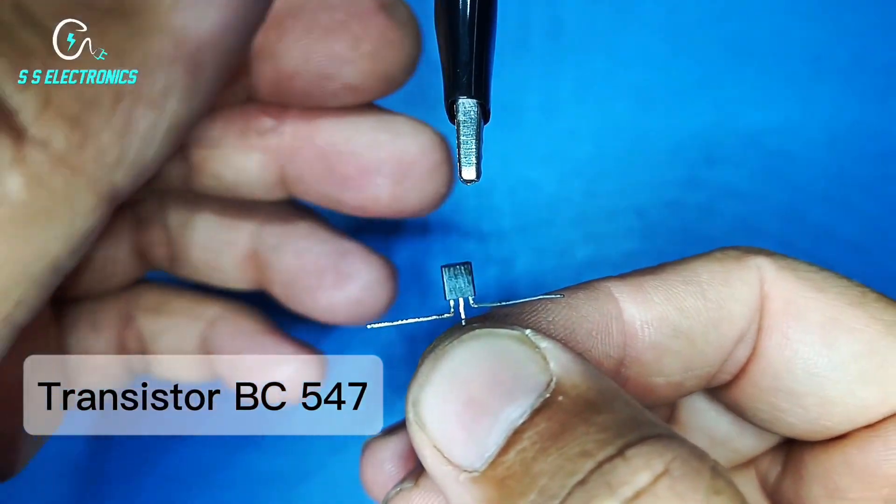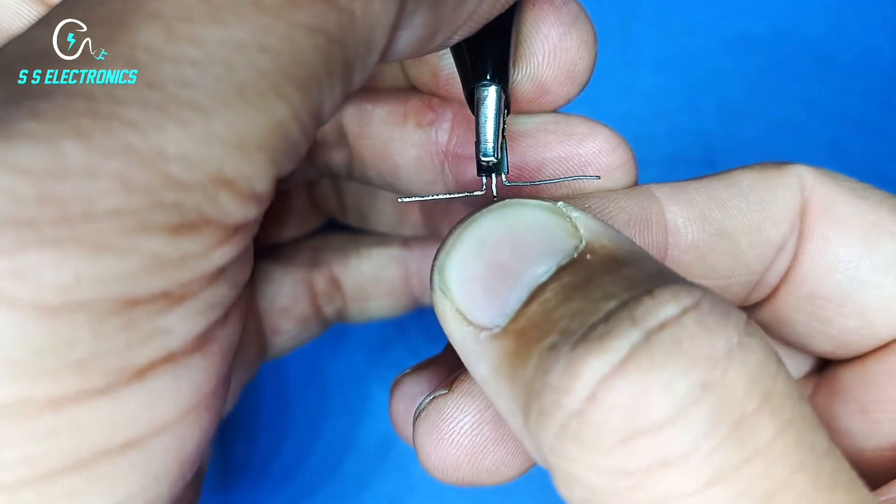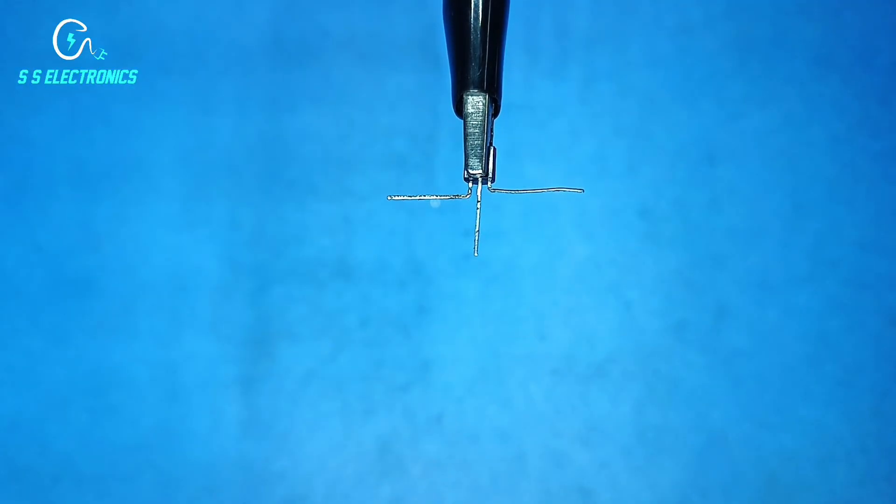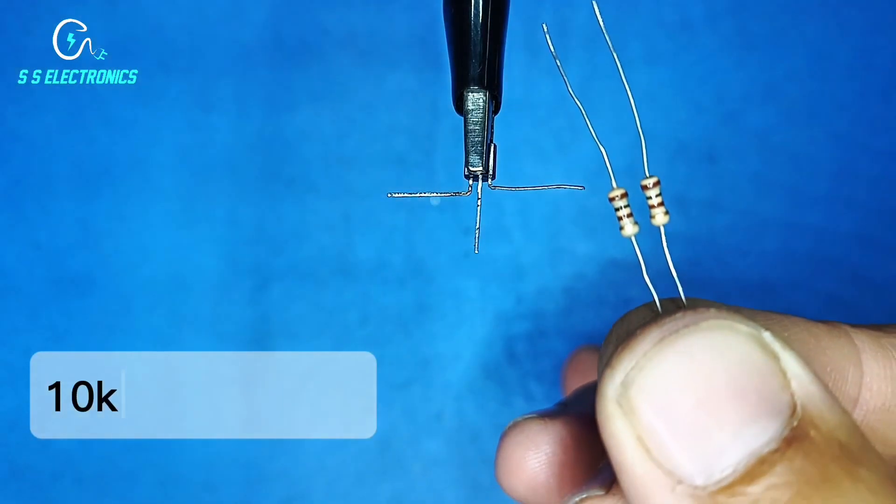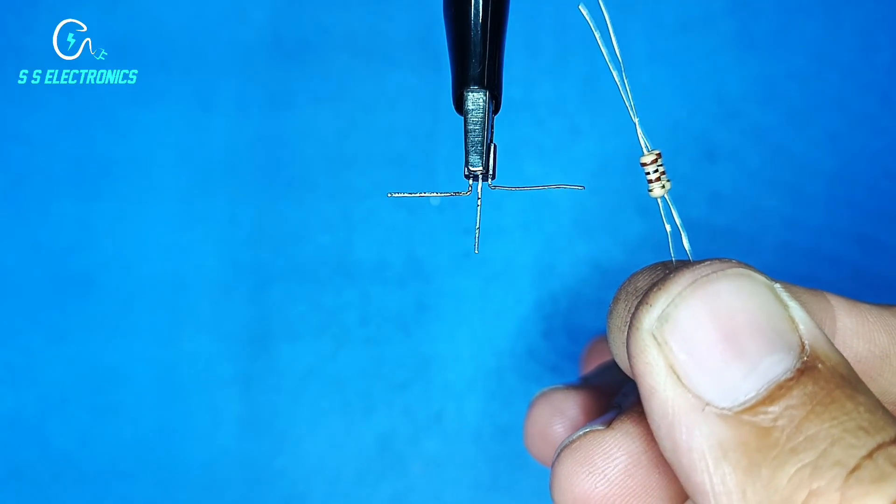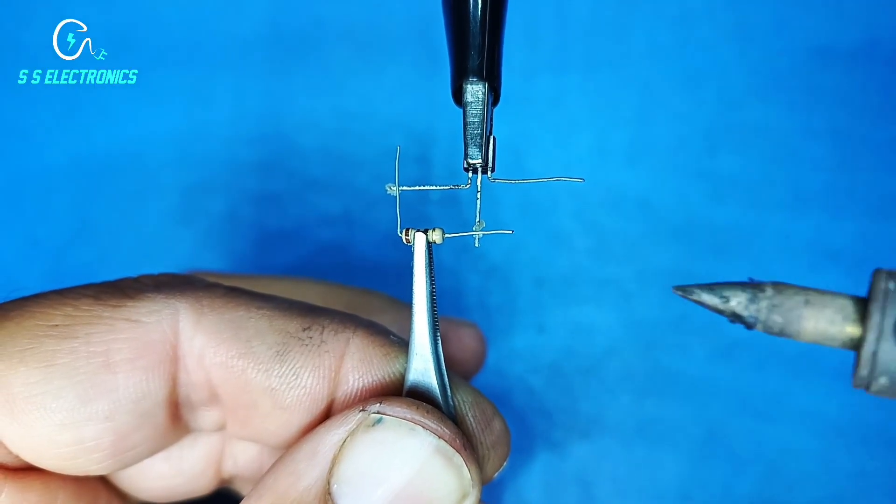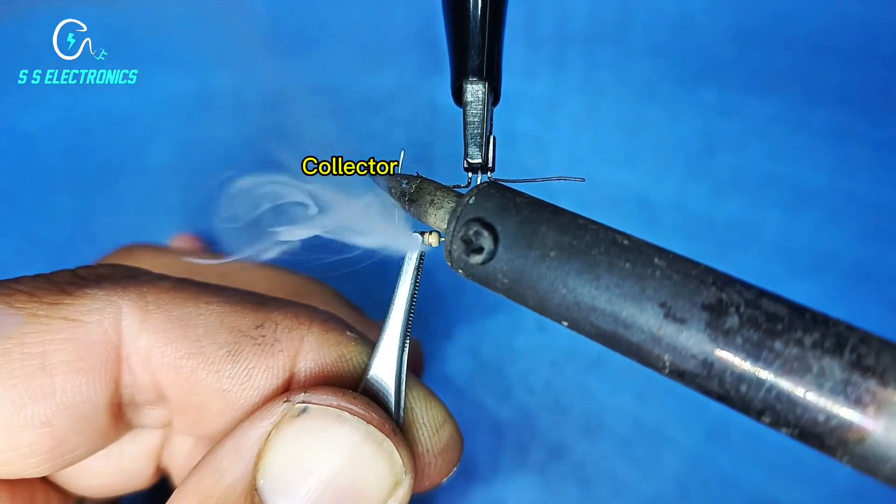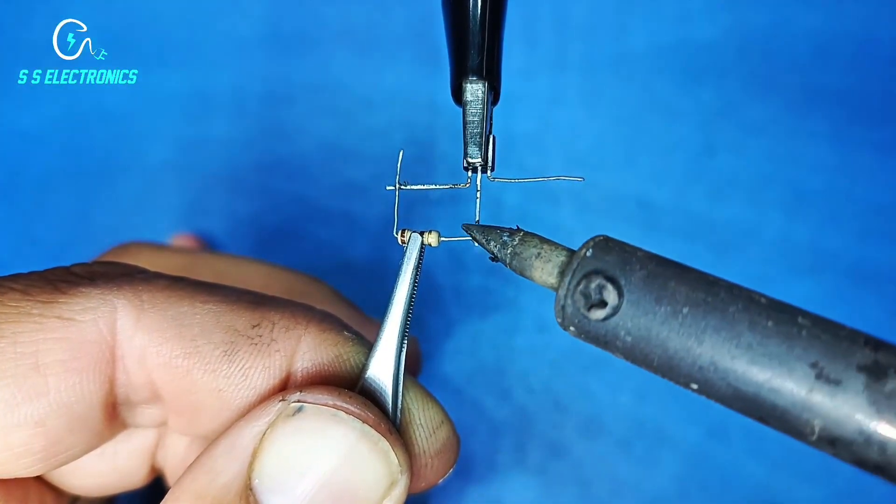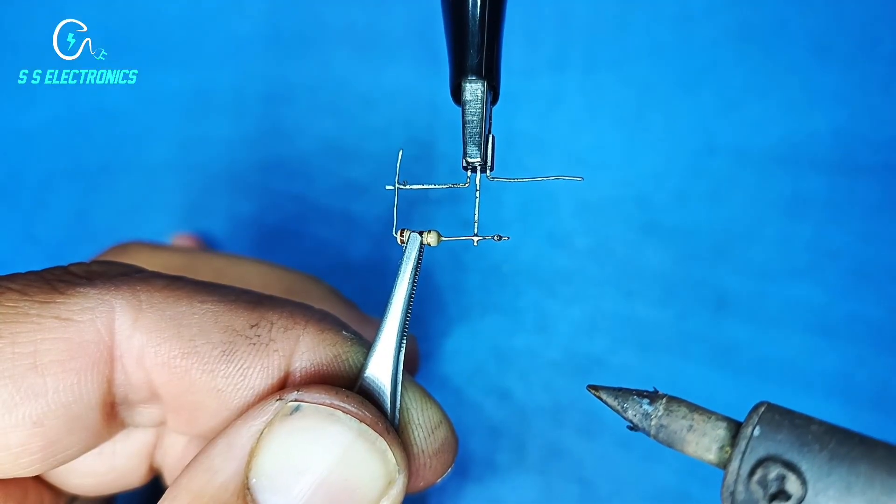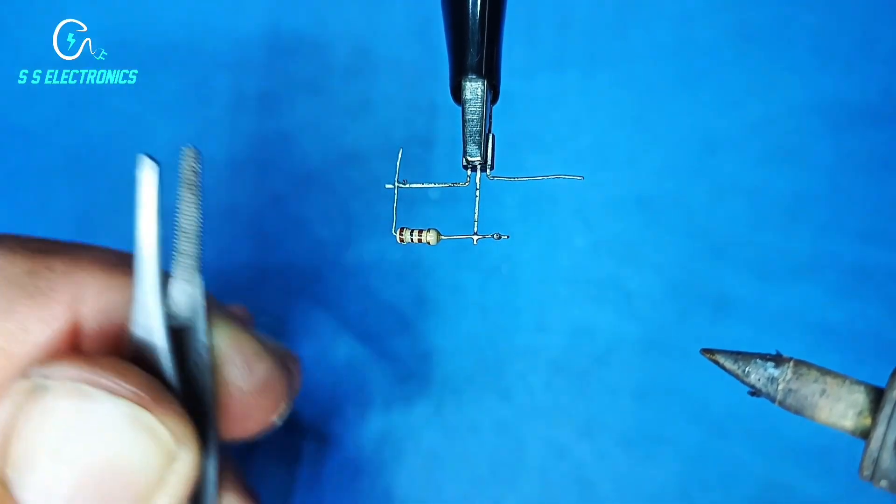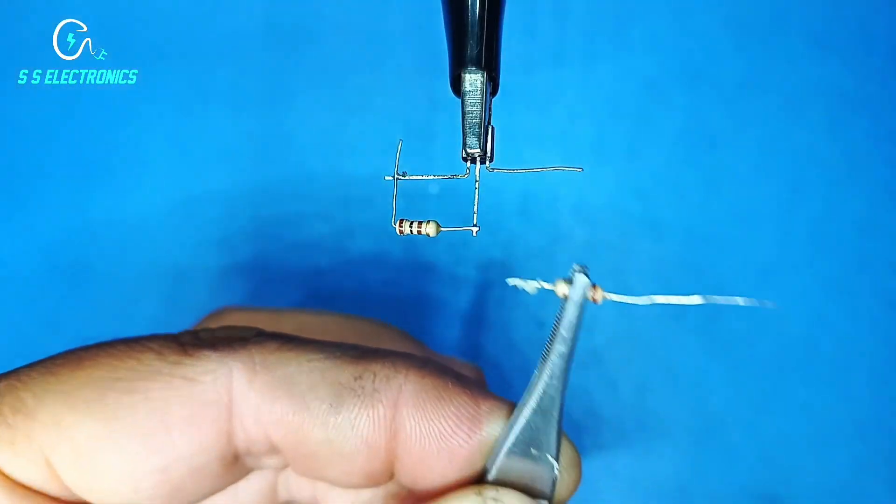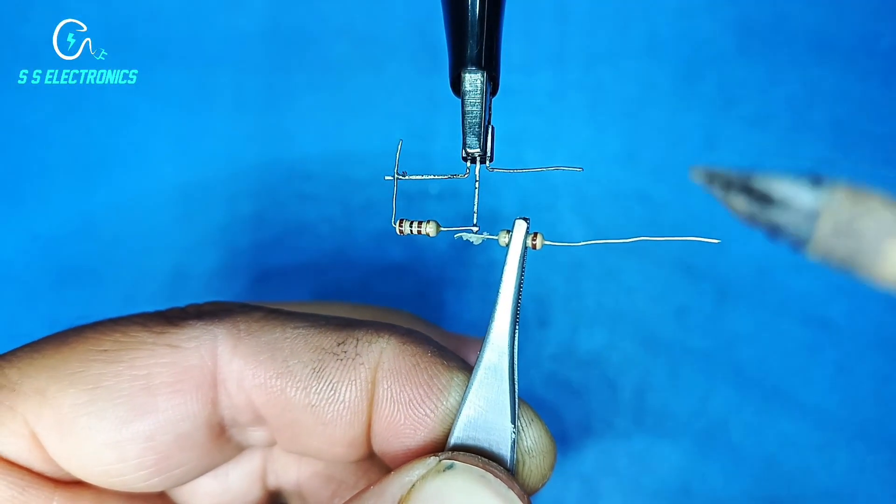Transistor BC 547, 10k resistance - one side connecting with transistor collector pin and other side connecting with transistor base pin. Second resistance connecting with transistor base pin.